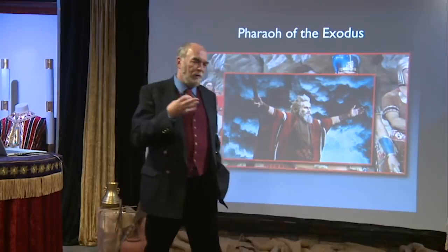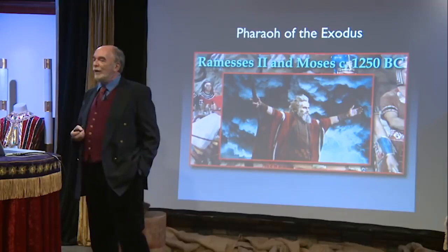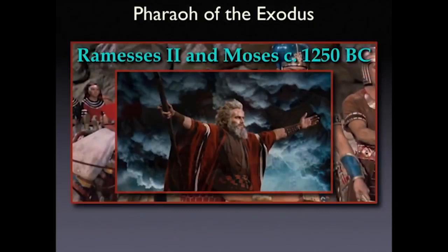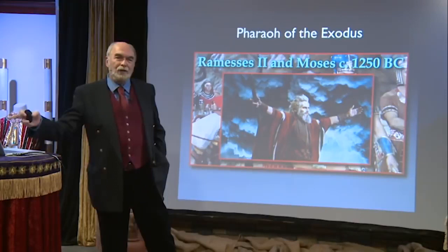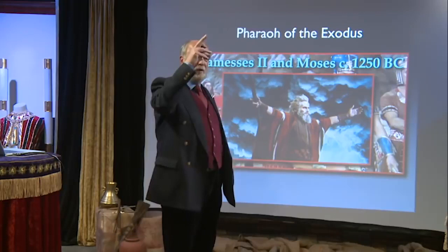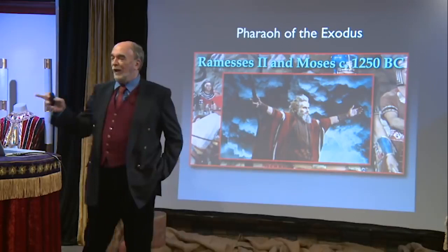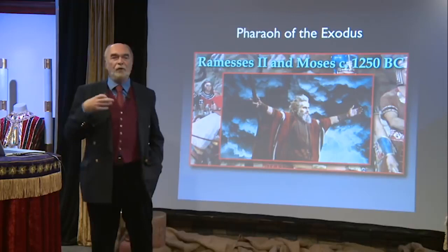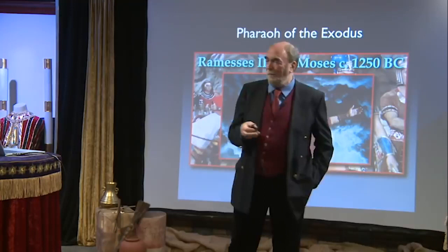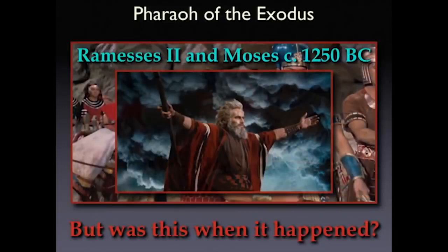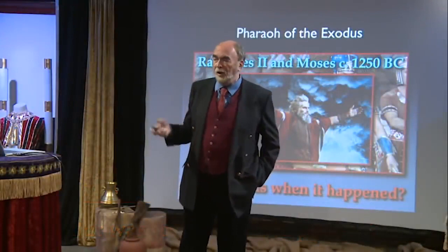Conservative evangelical scholars say that can't be right — if Ramesses II and Moses places the Exodus around 1250 BC, that's not what the Bible says. The Bible has a different date, roughly 200 years earlier. Yet scholars went for 1250 BC simply because of the city of Ramesses, which the Israelites built, mentioned in the first few lines of Exodus. Some scholars go for 1450 BC, placing the event in the 18th dynasty. Most scholars, however, say it didn't happen at all — certainly not in the time of Ramesses.